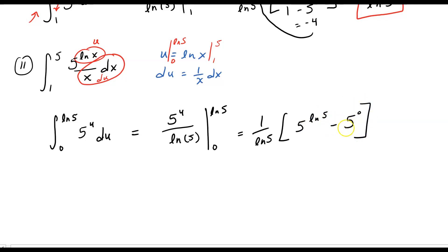5 to the 0, of course, just becomes 1. So, when you clean this up, you get 5 to the natural log of 5 minus 1 all over the natural log of 5. Your final answer. So, really, not terribly difficult. These rules are really nice. The definite integral is nice because you adjust the limits of integration. You don't have to back substitute. What more could you ask for? It's relatively easy when you think about it.